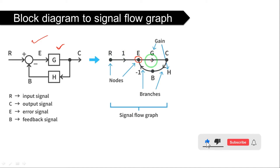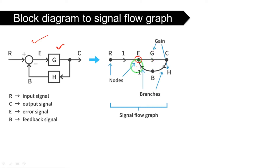This is very simple. We can draw the signal flow graph for any block diagram by replacing the gain blocks with a branch and junction points with nodes. So a signal flow graph consists of only branches and nodes. Every branch has one value, which is the gain value.